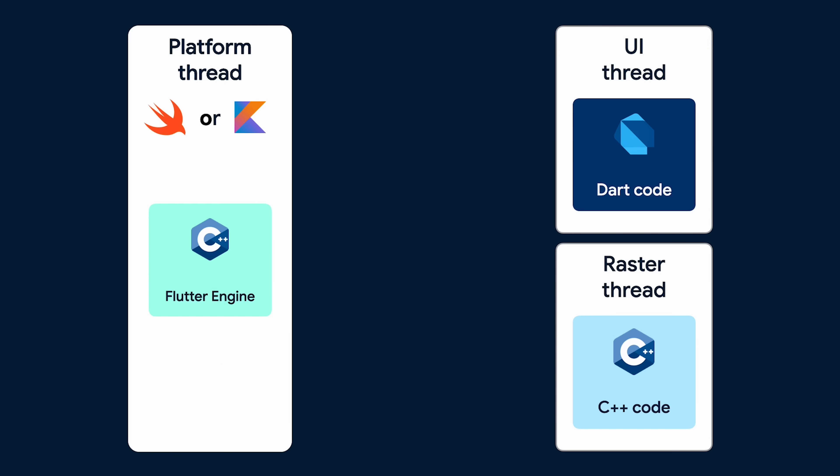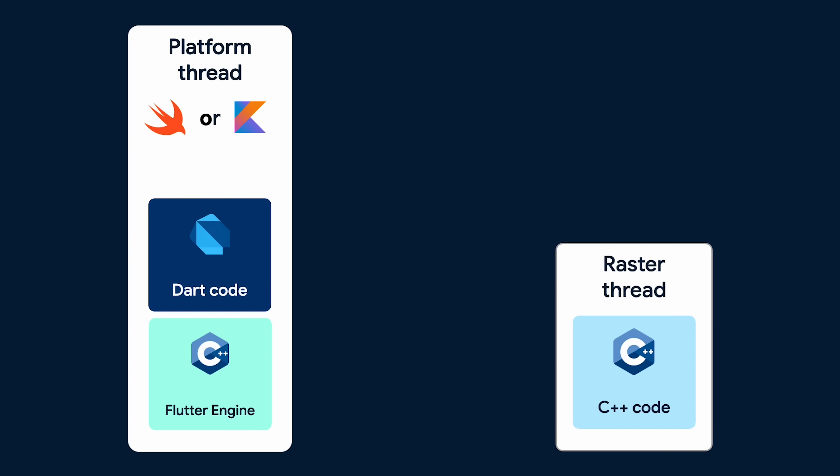The problems with platform channels include the forced use of futures on any function call that must pass through a platform channel to complete, which complicates some native APIs that must be synchronous. Another problem is that all of these payloads have to be fully serialized, meaning type safety on parameters and return types are lost. But here's the kicker: that platform thread running any Swift or Kotlin — Flutter apps don't tend to have a ton of that, so it pretty much just sits there twiddling its thumbs. Armed with this knowledge, you might be able to guess which thread is going to be merged into which other thread.